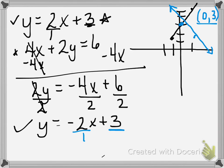And we can always plug it back in and double check. Does 3 equal 2 times 0 plus 3? 2 times 0 is 0, plus 3 more is 3. So that one works. Does 3 equal negative 2 times 0 plus 3? Negative 2 times 0 is 0, plus 3 is 3. So that one works. So the solution for this system of equations is 0, 3.